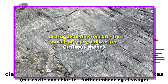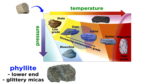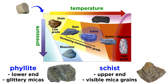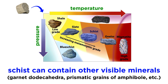These medium-grade metamorphic rocks are distinguished from slate by the onset of recrystallization, which gives them a lustrous sheen. At the lower end of medium-grade metamorphism, the recrystallized micas are very fine-grained, having the appearance of glitter. This type of rock is called phyllite. Closer to the upper limit, recrystallization increases to the point where the individual mica grains become easily visible to the naked eye. This rock is called schist. In addition to mica, schists may contain other visible minerals, such as garnet dodecahedra, or prismatic grains of amphibole.